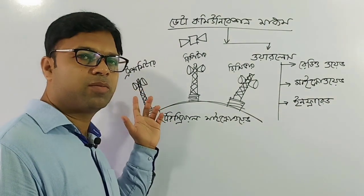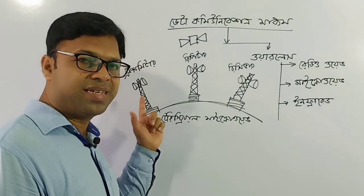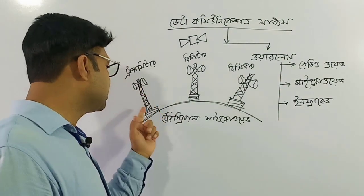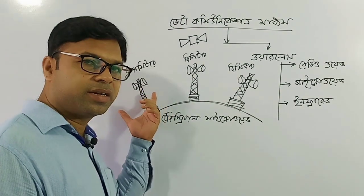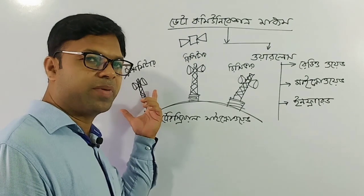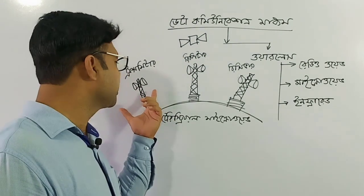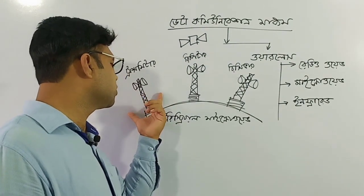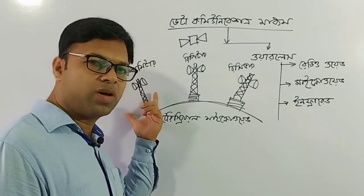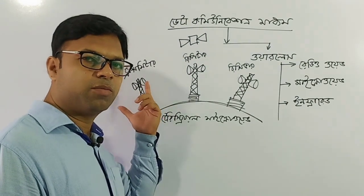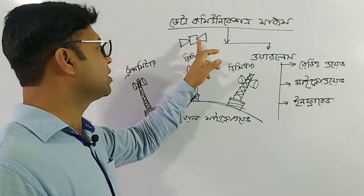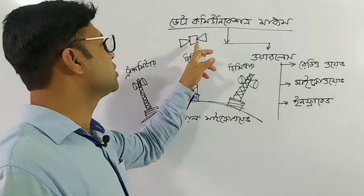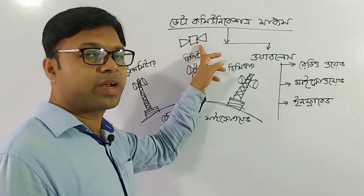We call the satellite microwave system V-SAT. V-SAT is a land station, also called a base station. The satellite acts as a transponder.